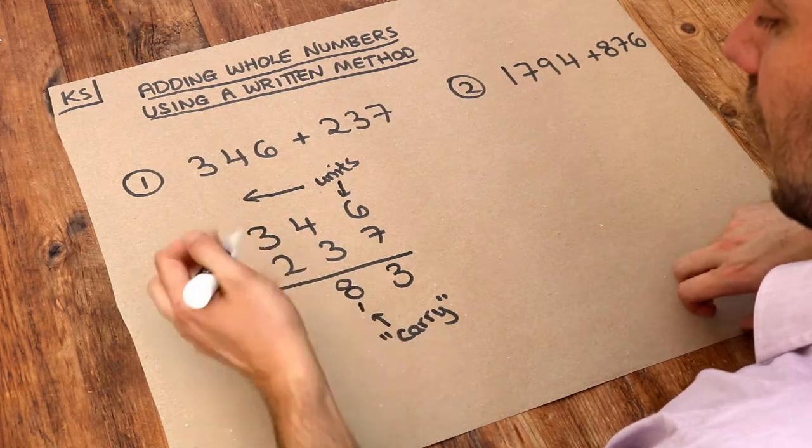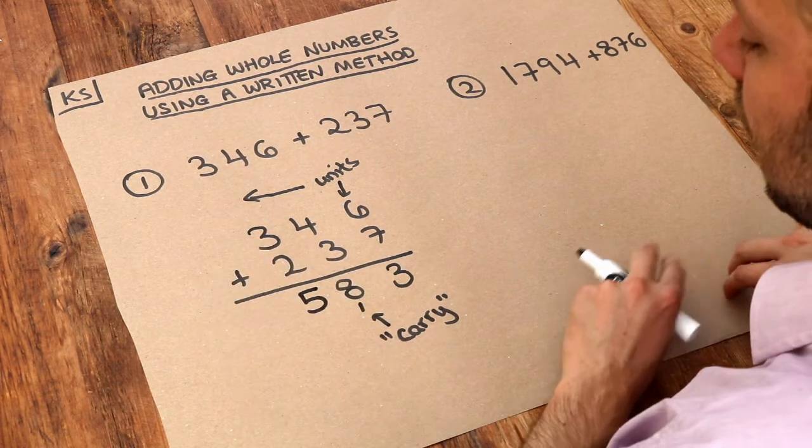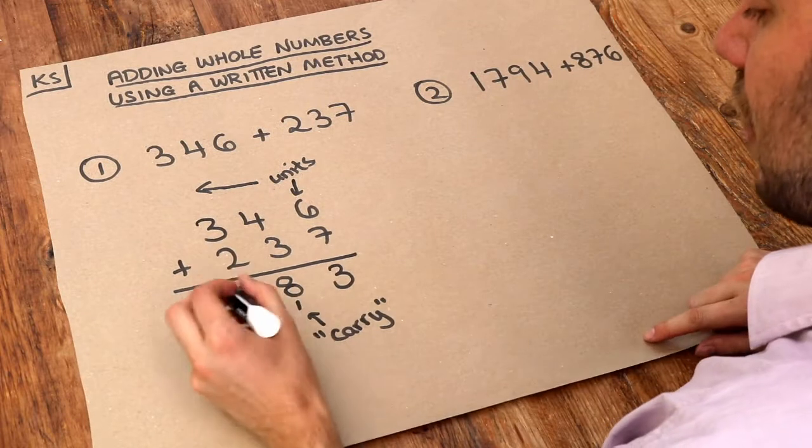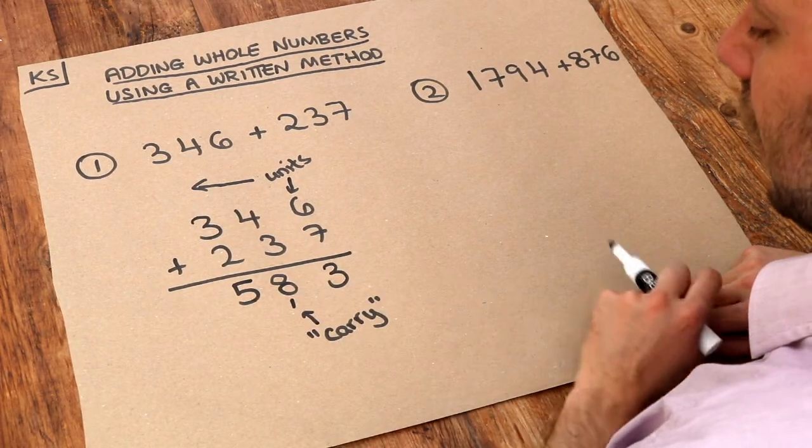Now we do 3 plus 2, that's just 5. Again no carry, so we're absolutely fine. So this is the answer: 583.